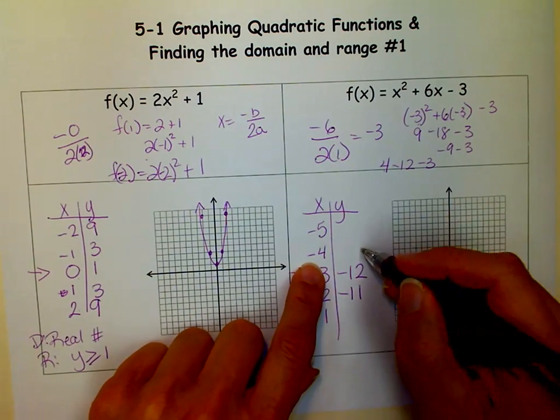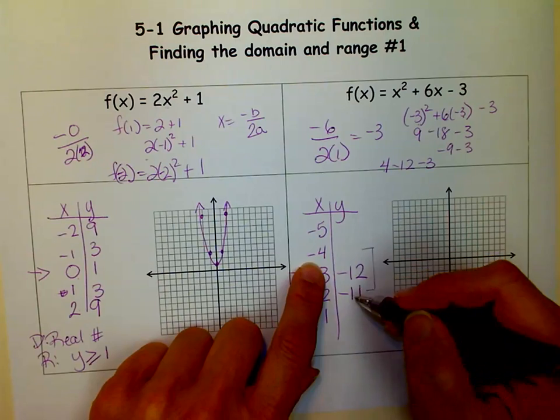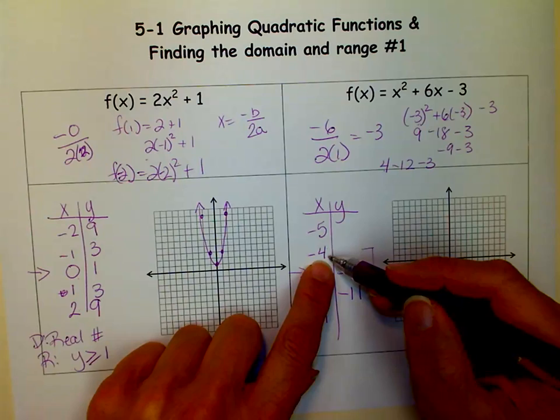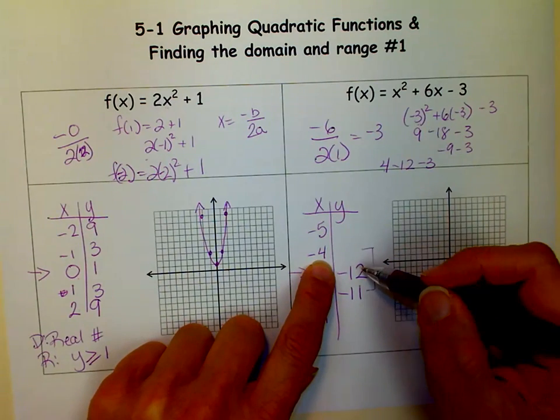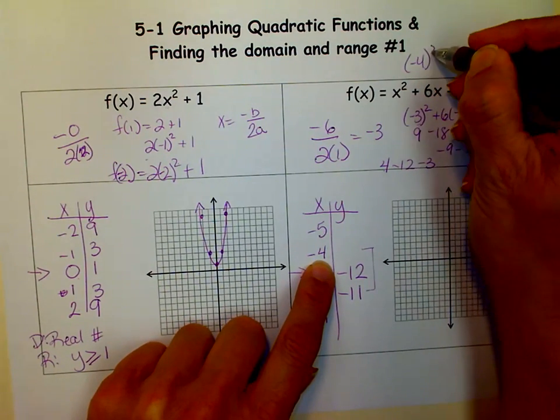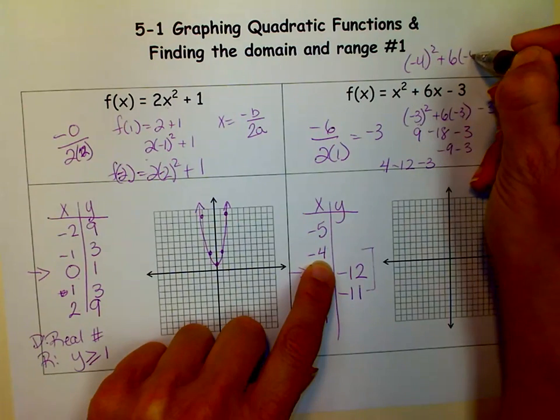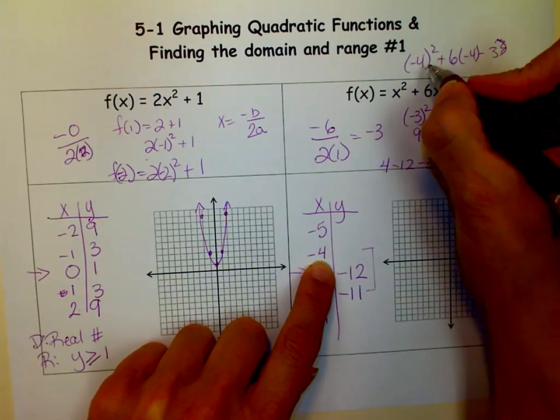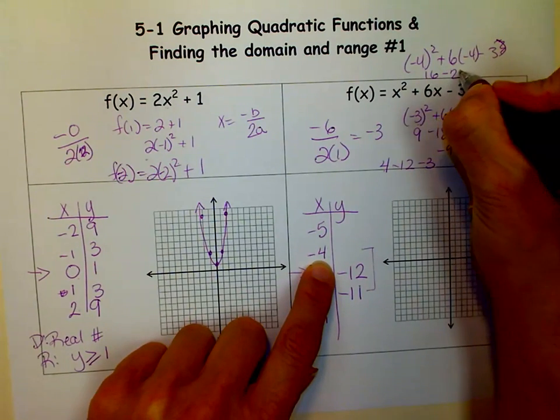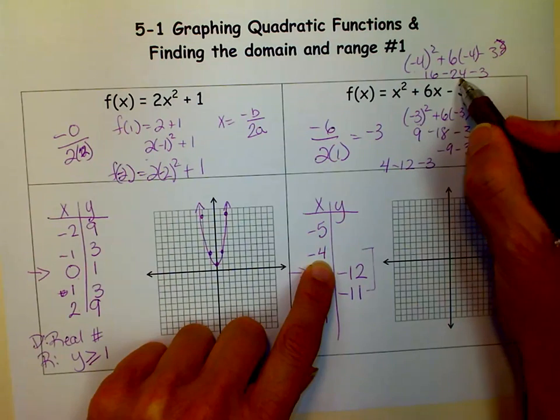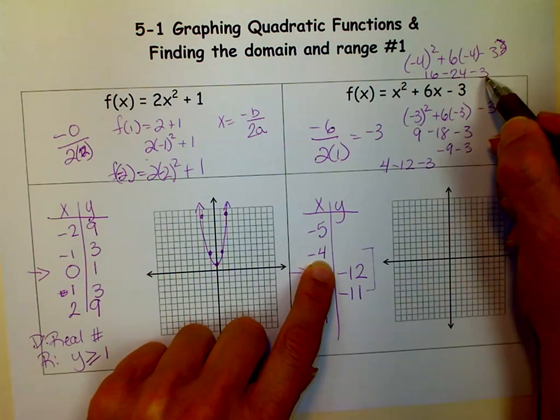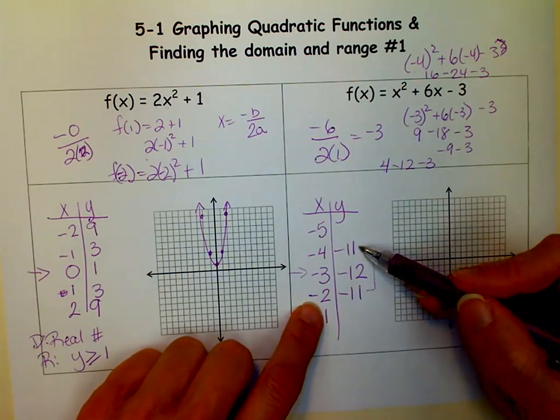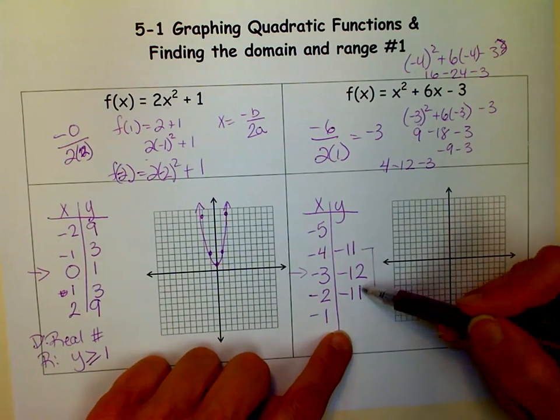And if I put negative 4 in, remember, I'm talking about that symmetry. That's why we do it like this. We put the vertex in the middle and pick points before and after. I should get a negative 11 for the negative 4 as well. So when I put that negative 4 back in, that's 16 minus 24 minus 3. Well, 16 minus 24 is negative 8, minus 3 is negative 11. So that's how you can know if you're right, if you're getting those same points on either side of the vertex.